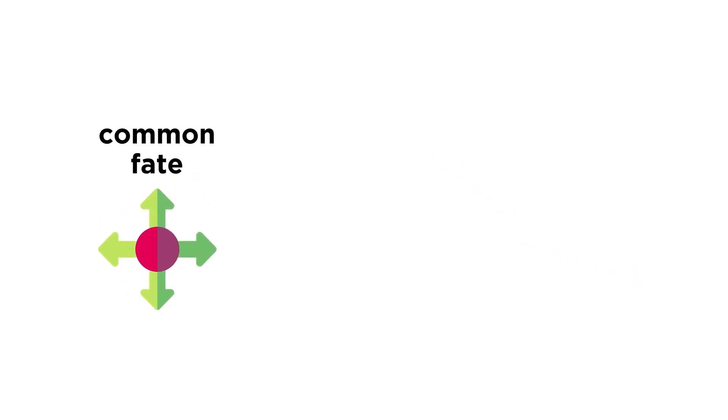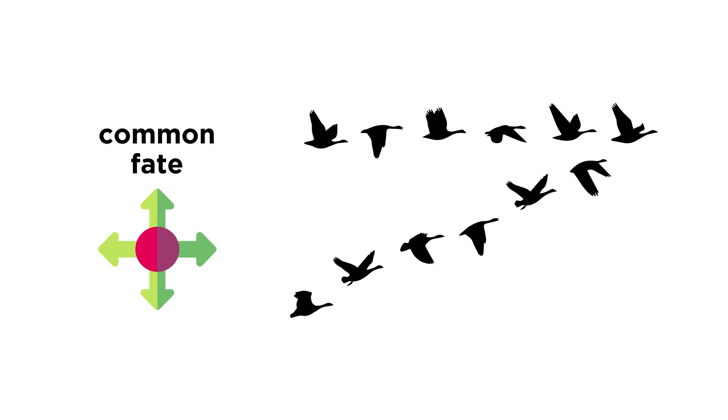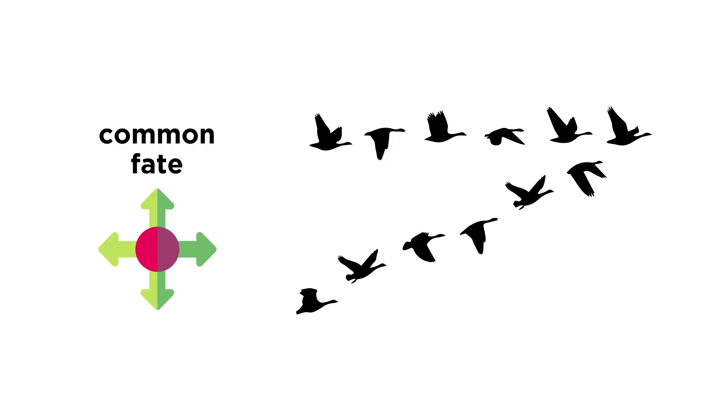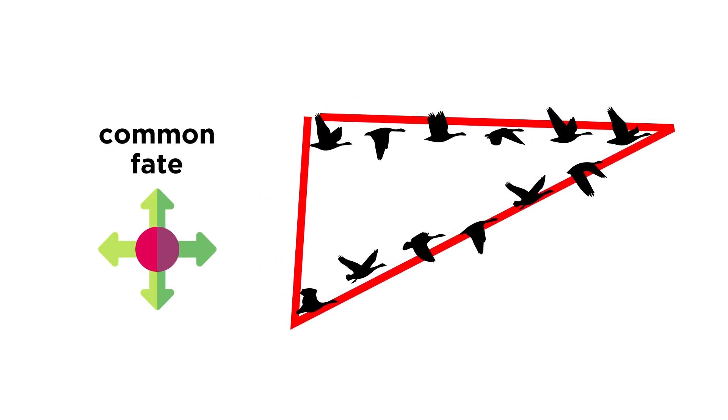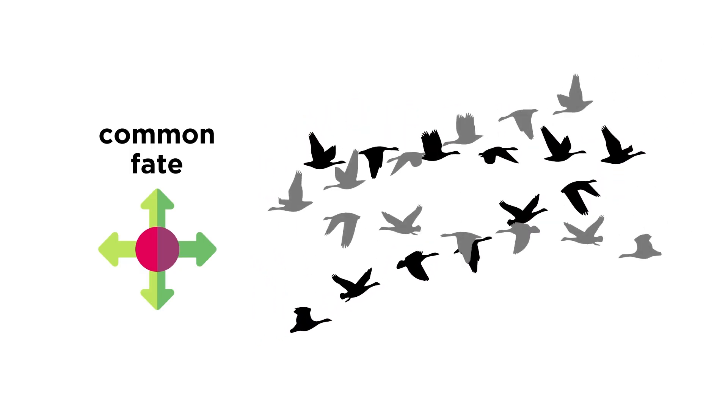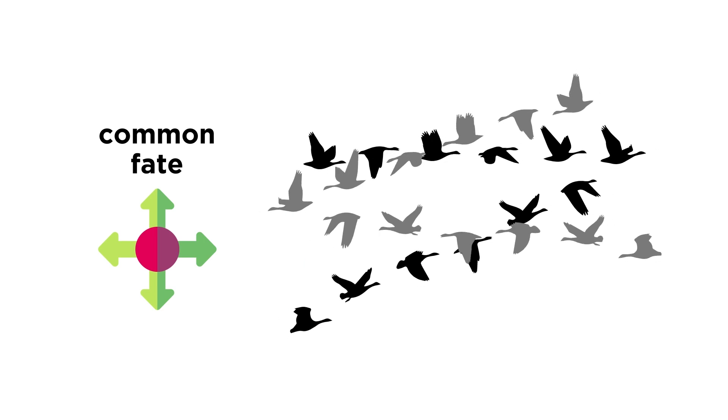The next principle, the principle of common fate, states that we perceive visual stimulus as part of the same overall object when they are moving in the same direction. Imagine you see a large flock of birds. Even though there are many birds, they are seen together as a single object, a flock, because they are all moving in the same direction and at the same speed. Even if two flocks crossed paths, we would see them as separate objects, because each flock would have a unique direction and speed.